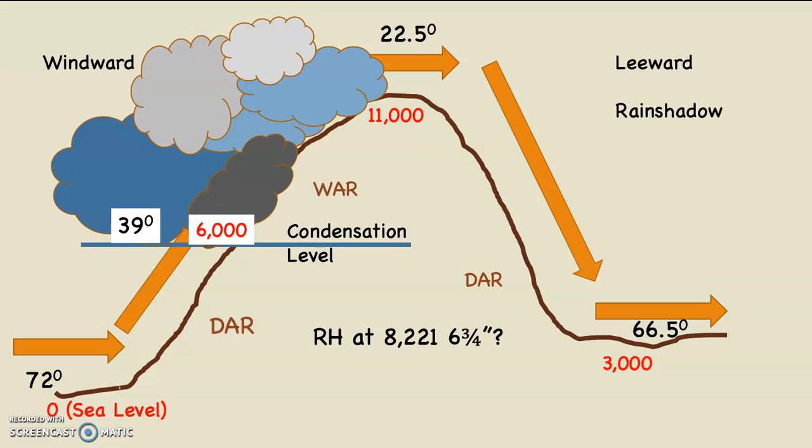This one always seems tricky — it's not tricky. What is the relative humidity at 8,221 feet and six and three-quarter inches on the windward side? Every place from 6,000 feet on the windward side to the top of the mountain at 11,000 feet has a cloud. There's no place without a cloud, which means that at 8,221 feet and six and three-quarter inches, the relative humidity must be 100%. Any number I would have given you — 6,915 feet, 10,012 feet, 9,888 feet — it doesn't matter. Every place from 6,000 up to 11,000 on the windward side is 100% relative humidity.